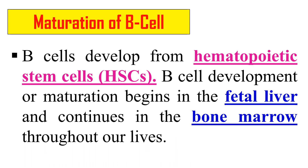First, maturation of B cells. Maturation means when a B cell is formed from a hematopoietic stem cell (HSC), it undergoes some developmental stages which ultimately lead to its maturation. The maturation of B cells involves its production from the hematopoietic stem cell to the development of a mature B cell, beginning in the fetal liver and continuing in the bone marrow throughout life.